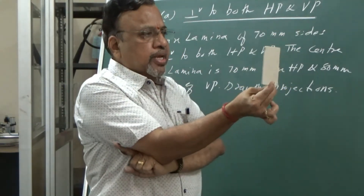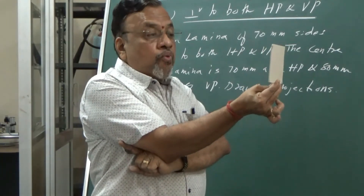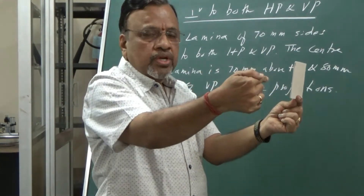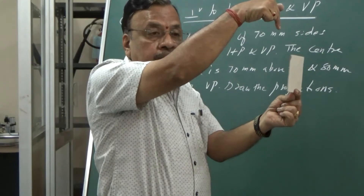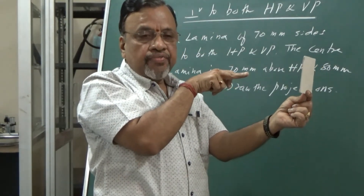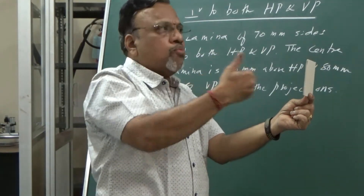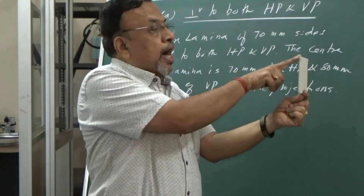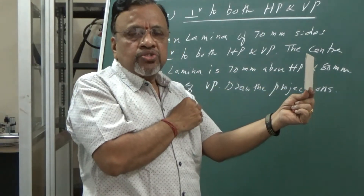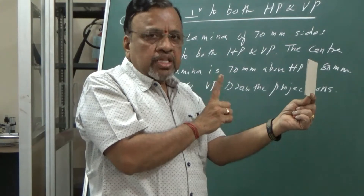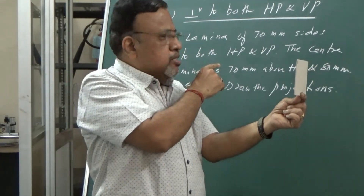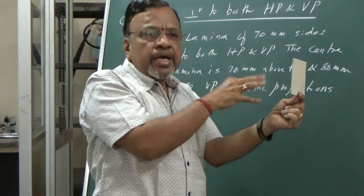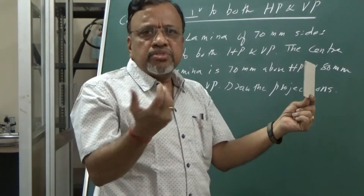In this particular case, if I hold the lamina like this, the true shape and size of the lamina is seen in the side view — that is, if I view from the side, considering the third plane which is the profile plane. So I can conclude that if the lamina is perpendicular to both HP and VP, the true shape and size is seen in the side view, and I need to start from the side view.